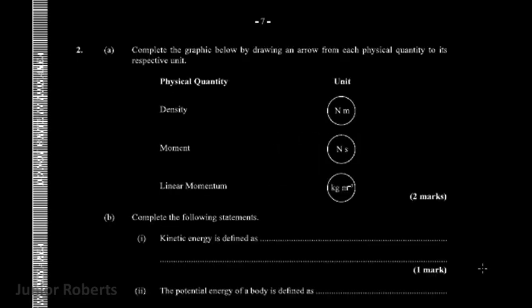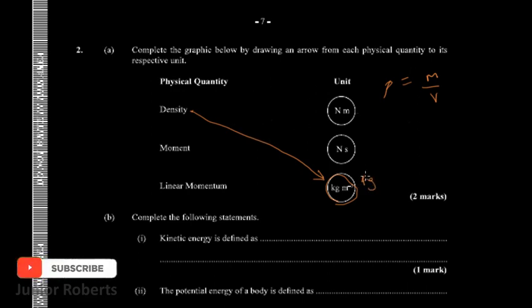The question says complete the graphic below by drawing an arrow from each physical quantity to its respective unit. The first physical quantity is density. We know that density is equal to mass divided by volume. The SI unit for mass is kilogram, the SI unit for volume is meters cubed. So therefore, the unit for density is kilograms per meter cubed.